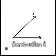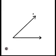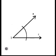Construction number two: copying an angle. This is how to construct an angle congruent to angle ABC. Place the compass point at B and with a convenient radius, construct an arc which intersects the sides of angle ABC. Label these points of intersection H and G.